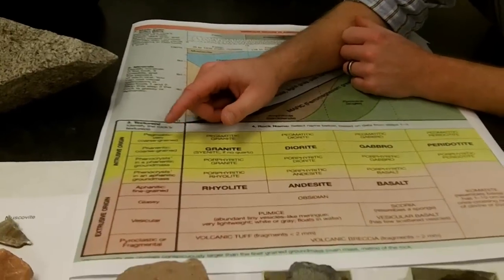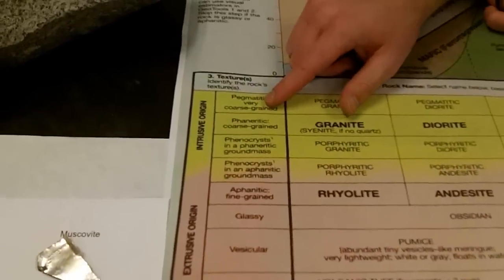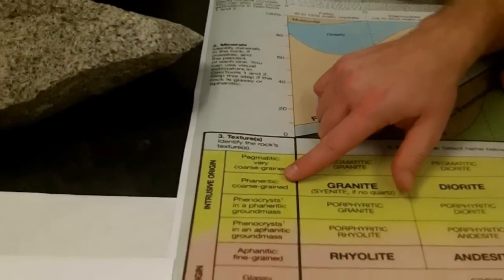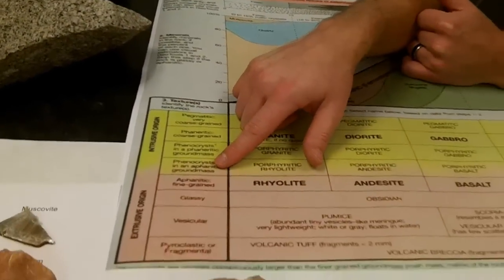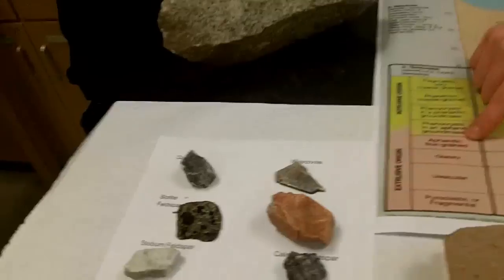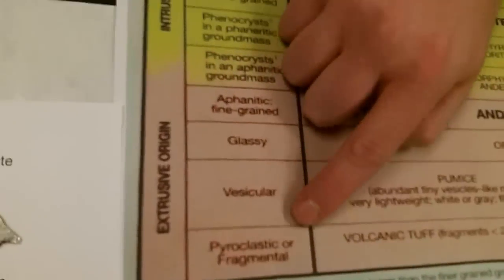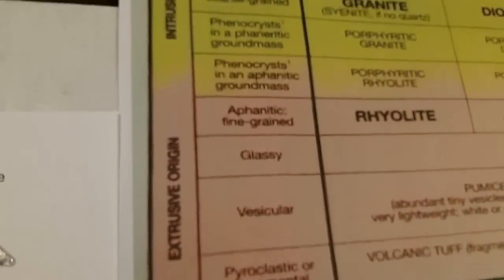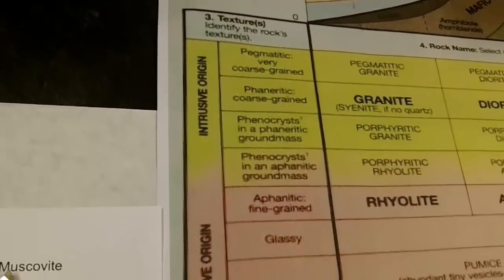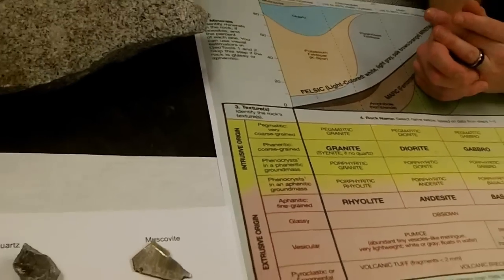We've got our textures going from phaneritic down to porphyritic, down to aphanitic, then glassy, vesicular, and pyroclastic or fragmental. That's one of two things we need to look into when identifying igneous rocks: texture — the size and shape of the different mineral grains — and composition — the type of minerals that are present, just like what Ms. Awad pointed out to us earlier.